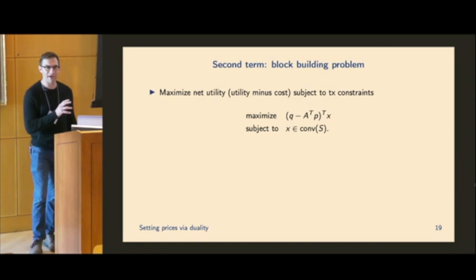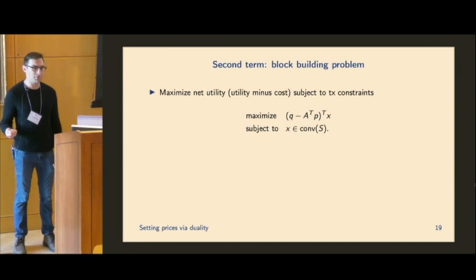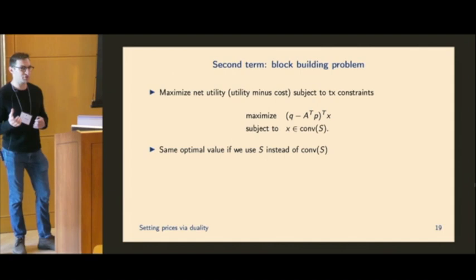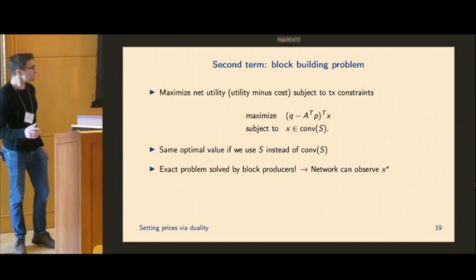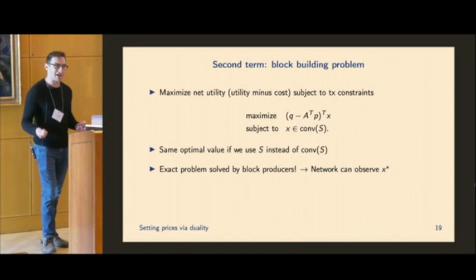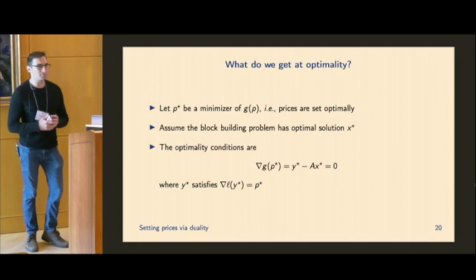So kind of we write that out as an optimization problem, and it's pretty clearly exactly the problem solved by block builders. So it's to maximize the net utility, or to choose the transactions that maximize the net utility, subject to them being in the set of allowable transactions. And one thing here that we actually can do is we can replace the convex hull of S with just S itself, because this is a LP, or sorry, a linear program. These two are going to have the same optimal value. So once we get to this point, we actually can ignore that convex hull constraint. And then because this is the exact problem solved by the block producers in determining what transactions go into a block, the network can just observe X star, which is the transactions included in, say, the previous block, or some set of previous blocks. So the network actually never has to solve this difficult, hard optimization problem.